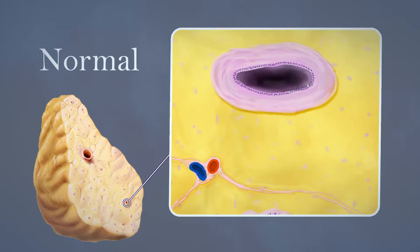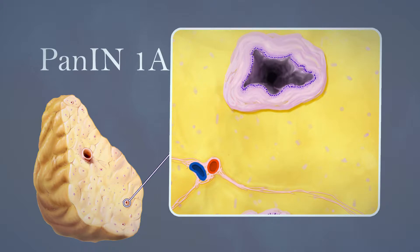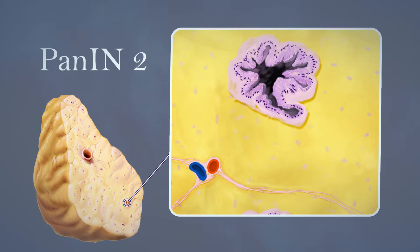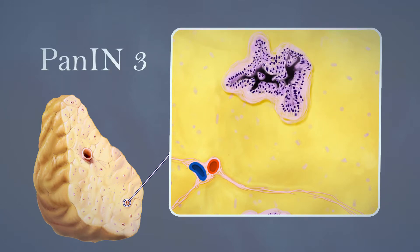The normal cells lining the small ducts in the pancreas are gradually replaced by columnar epithelial cells. They can be flat or papillary. The nuclei enlarge and start to vary in size and shape. Cell clusters can bud from the papilla, and the lesions multiply.